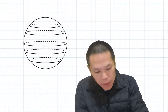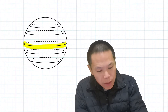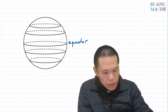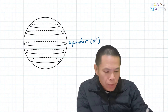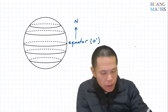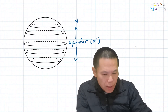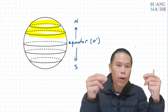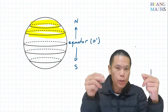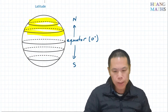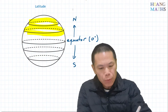So the great circle that is right in the middle of the earth — this great circle we call the equator, which starts at zero degrees. Anything above the equator is north, and anything below the equator we call south. These small circles tell you how far the angular distance is away from the equator. These are called latitude.